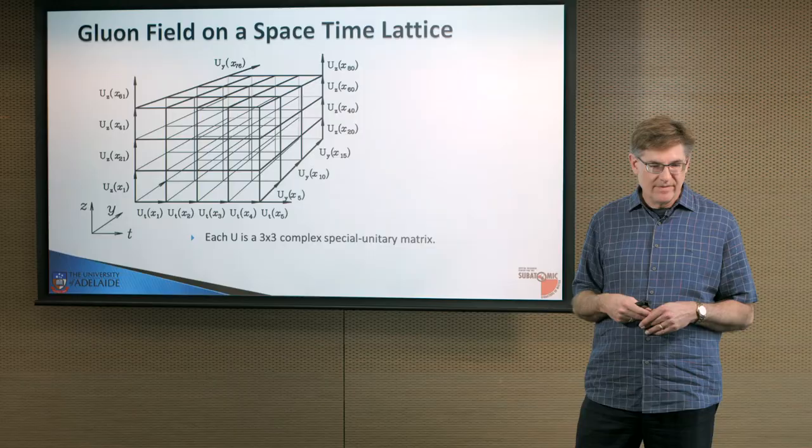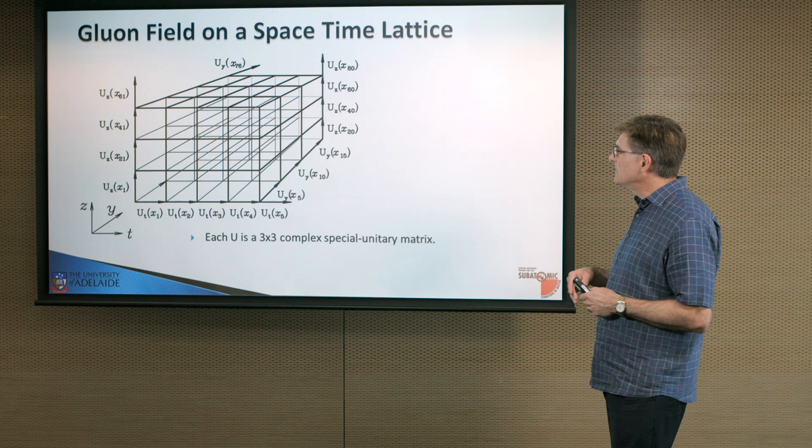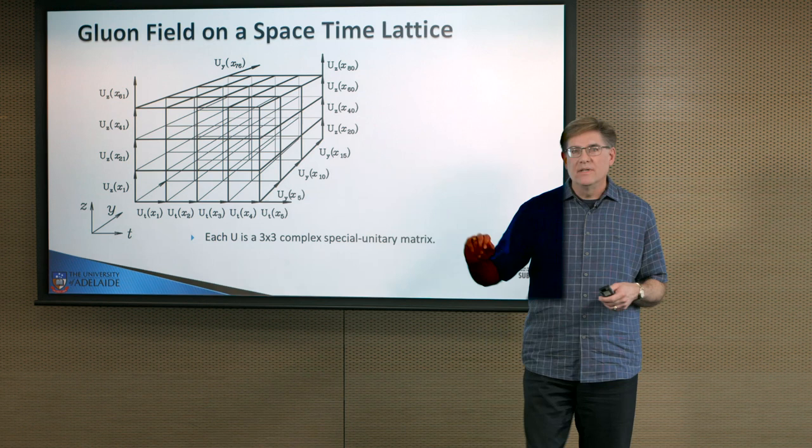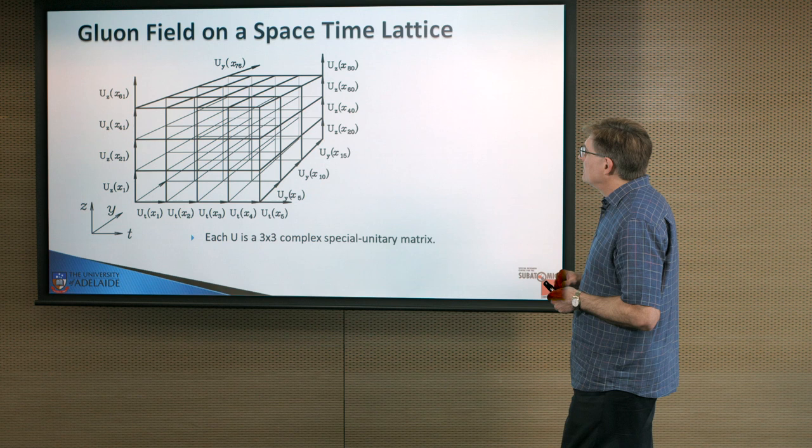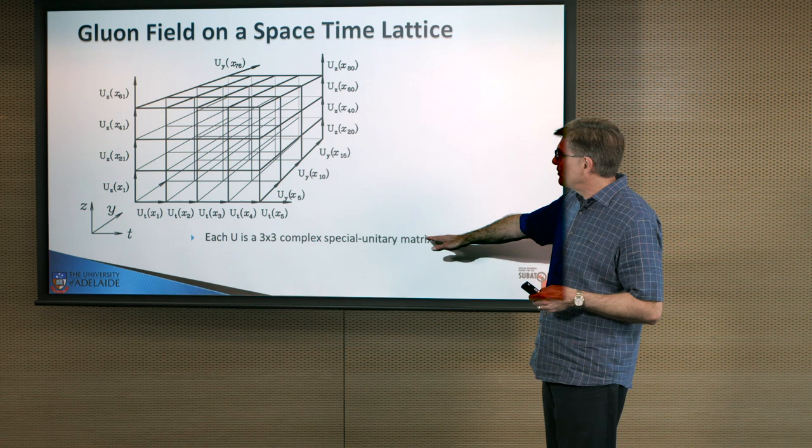So the idea is that the gluon fields, at each point in space-time, you'll have a gluon field. The gluon field is a vector field, so you need to associate a direction with it. So it's actually the links that the gluon field sits on. Because there's eight gluons, each link is actually a 3x3 complex special unitary matrix that has the eight degrees of freedom that we need.